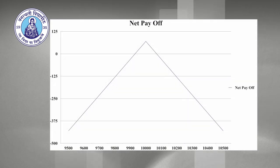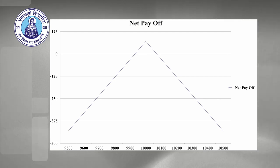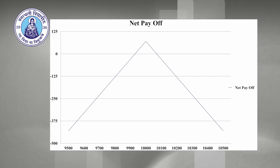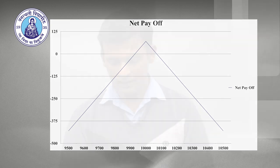The chart of the net payoff of the short straddle is just opposite to the long straddle. On the X-axis are the Nifty closing levels and on the Y-axis are profit and loss. At the 10,000 level in either direction, the investor will ultimately face unlimited loss. Thank you for watching the video — you will enjoy using the long straddle and short straddle in the stock market.